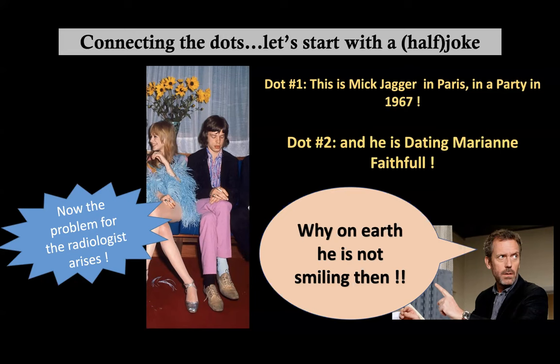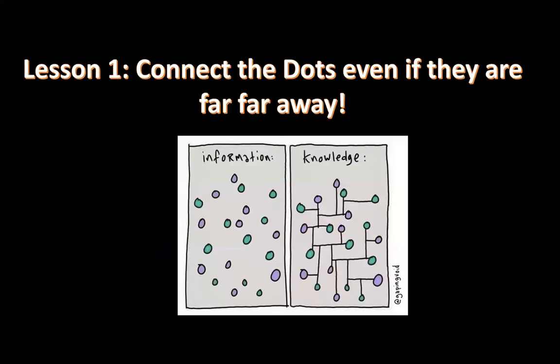I will give you the final bigger picture at the end of this lecture — just to remind you that when you see some combination or constellation of imaging findings and they do not add up together, think out of the box. And in these specific cases, when there is a tumor plus something else, or more than one tumor, think cancer predisposition syndrome. It's all about connecting the dots, even if they are far, far away.